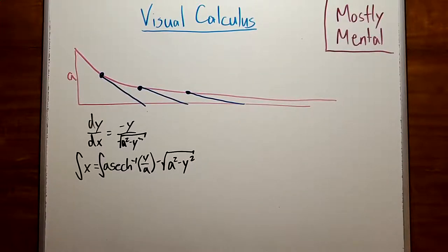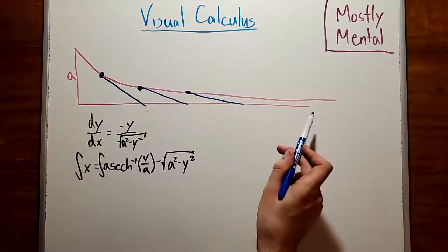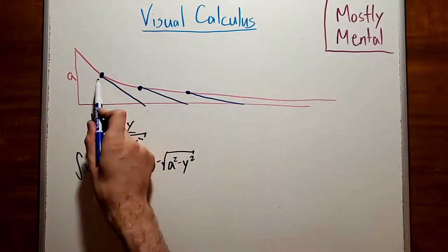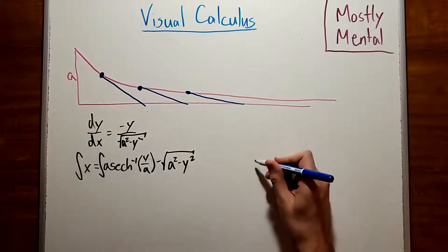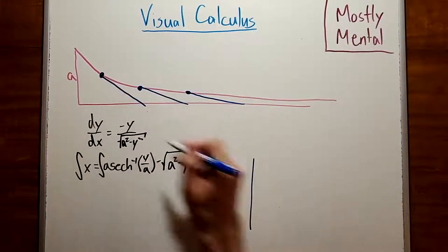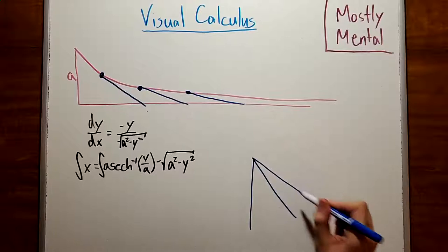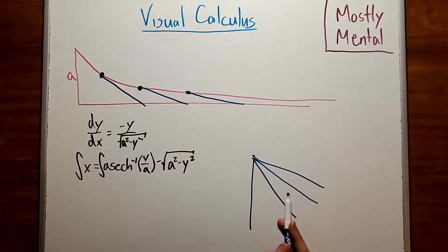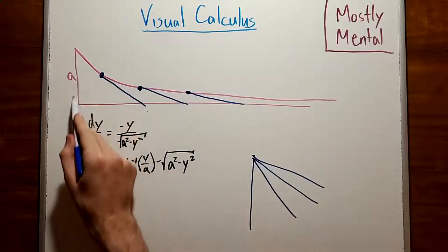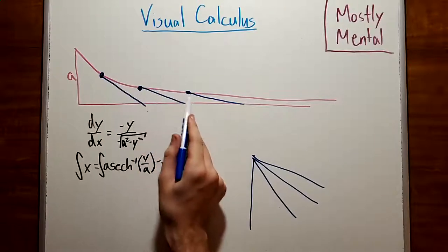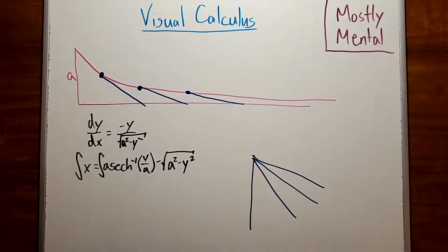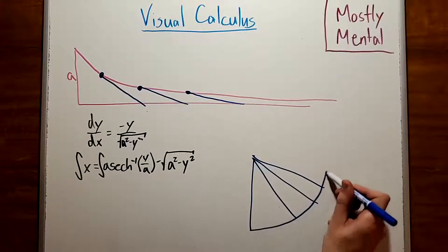And by Mamikon's theorem, the tangent sweep has the same area as the tangent cluster. So if we bring all of these tangent segments together at their top point, well, it starts out with a vertical one. And then down here, we've got this. And notice that all of these segments must have the same length, since the string isn't getting any longer or shorter. So this must be an arc of a circle.